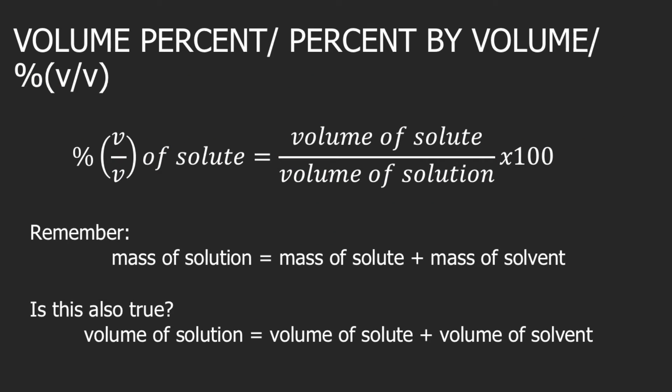Volume percent is also known as percent by volume or percent v over v, depending on the reference you are using. Volume percent of solute is equal to the volume of solute divided by the volume of solution times 100. Students usually ask if there is a specific unit of volume to use in the formula — the answer is none. You can use any unit of volume as long as you are consistent.